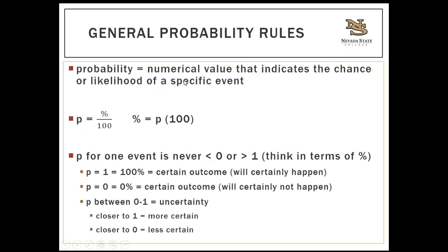General probability rules: probability indicates the chance or likelihood of a specific event. To find probability from percent chance, divide by 100; to get percent chance from probability, multiply by 100. The probability for one event is never a negative number — you can never have a negative 5% chance of something happening.